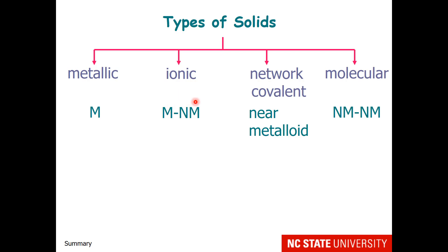Ionic solids are composed of metals and nonmetals or have polyatomic ions. Network covalent solids are near the metalloid region of the periodic table, and molecular solids are composed of nonmetals.